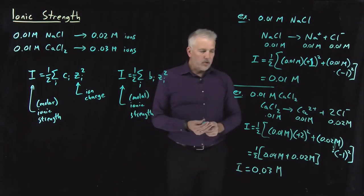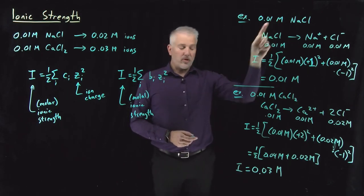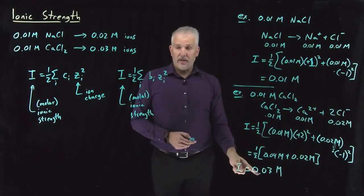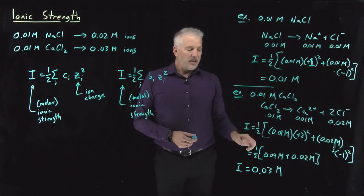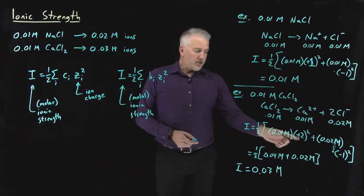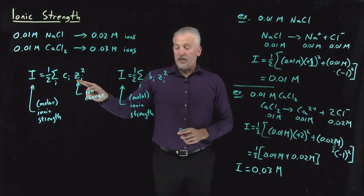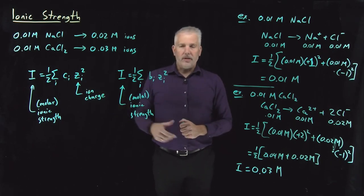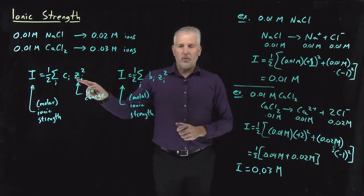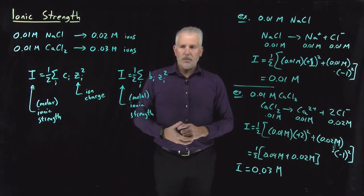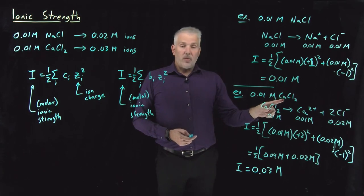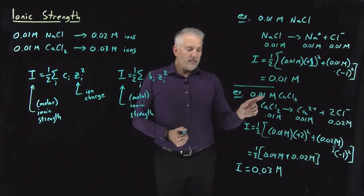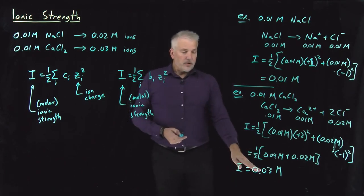The ionic strength of this calcium chloride solution is 0.03 molar — three times larger than its nominal concentration of 0.01 molar — because the effect of the calcium ions in solution is much stronger than the chloride ions. There's a good reason we use the weighting of ionic charge squared, as opposed to cubing or some other power, and that will become clearer when we discuss the Debye-Hückel law in more detail. For ions with charges greater than 1, the ionic strength is always going to be larger than the nominal concentration.